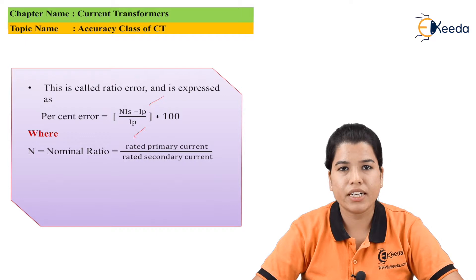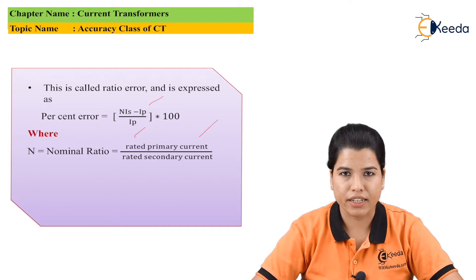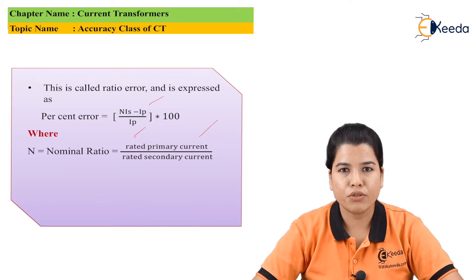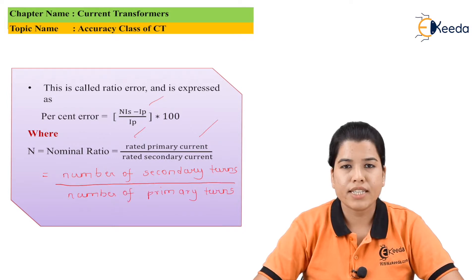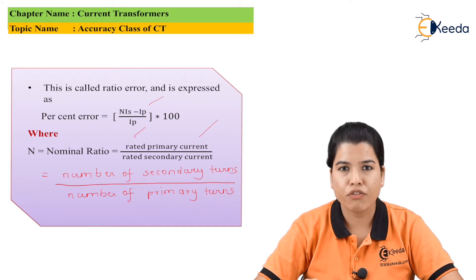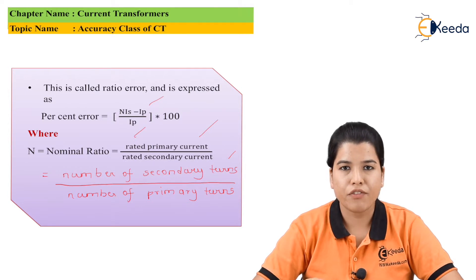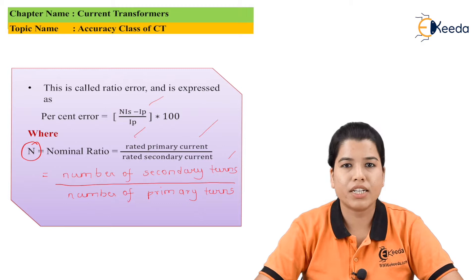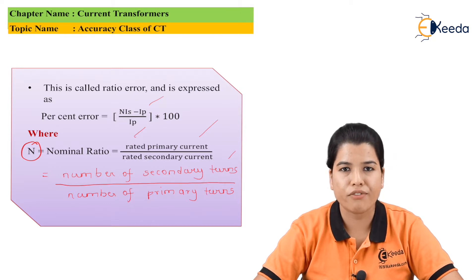Where N is the nominal ratio, which equals rated primary current divided by rated secondary current. N can also be expressed in terms of turns: N equals number of secondary turns divided by number of primary turns. If you compare N — the nominal transformation ratio — with the transformation ratio of a regular transformer, you will find it is exactly the reciprocal of the transformation ratio of a regular transformer.